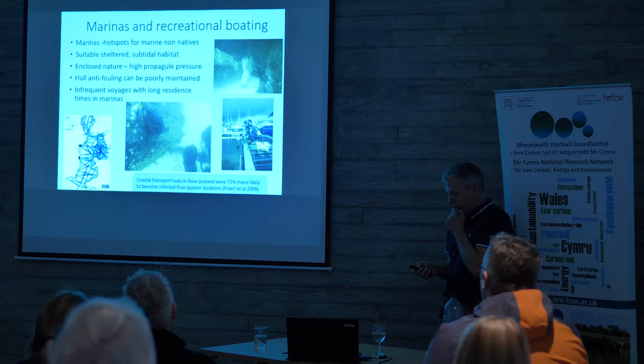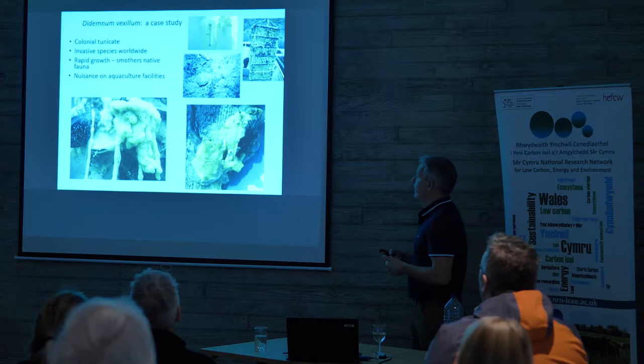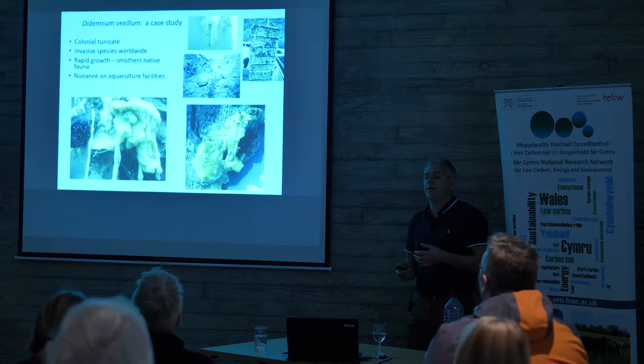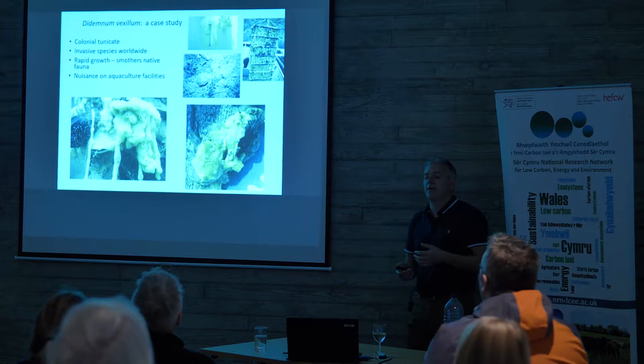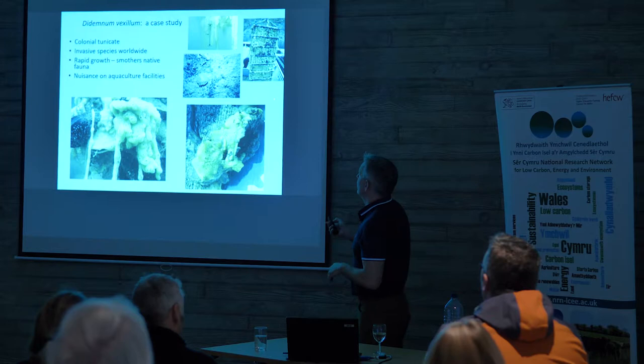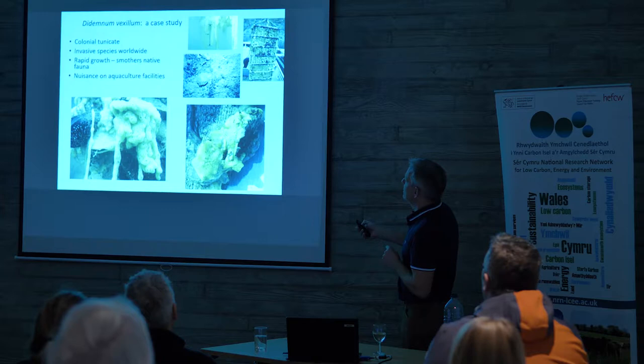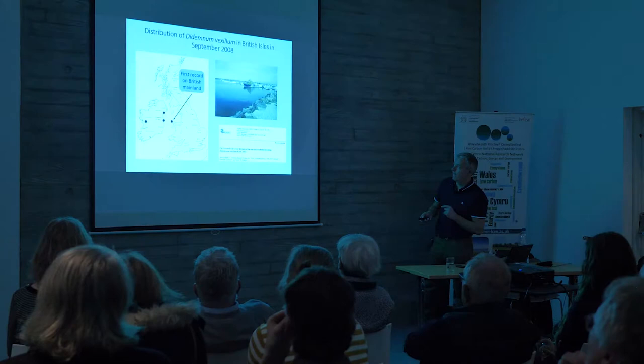Back to our colonial ascidian Didemnum vexillum — this is an invasive species worldwide. It grows quickly, it can smother native fauna, and in various parts of the world it's been shown to be a big nuisance on aquaculture facilities. It even grows in high densities in large parts of the Grand Banks of North America.